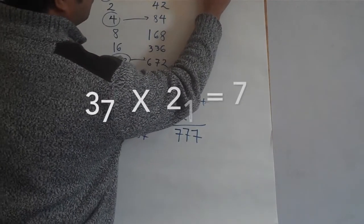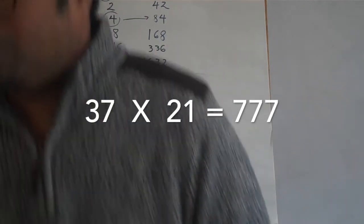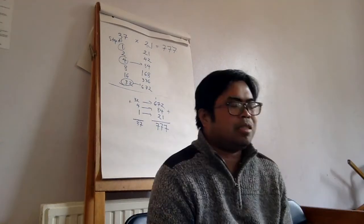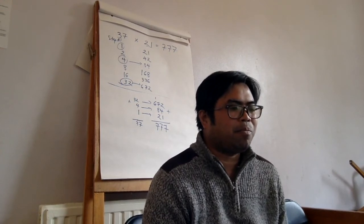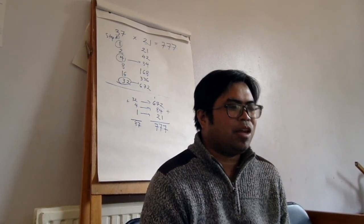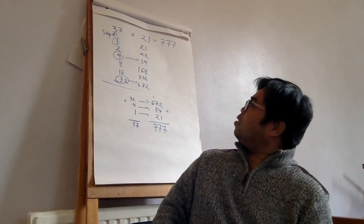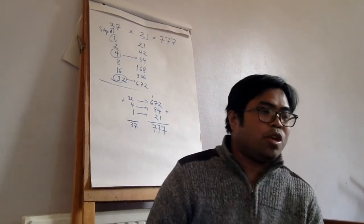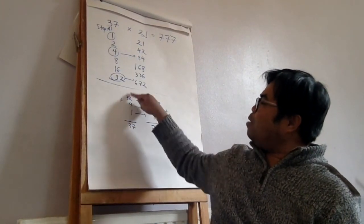So your answer is seven hundred and seventy-seven. Any questions or confusions? How do you know how far to double it? You stop when you have enough numbers that can add up to your target. For 24 we went to sixteen; for 37 we went to thirty-two. You stop when you think it's enough — when you have numbers that add up to the one you need.